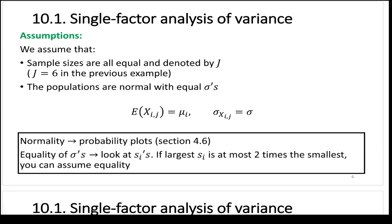We assume sample sizes are equal, denoted by J. J equals 6 in the previous example — that's the number of measurements in each population. Capital J is something we need to keep straight because it's used as a degree of freedom when we calculate our p-value. We need capital I and capital J both.